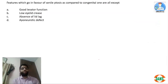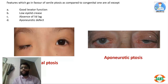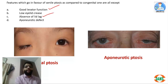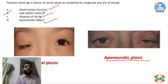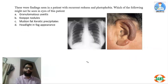Regarding features that favor senile ptosis over congenital ptosis: in congenital ptosis, the levator palpebrae superioris muscle is dystrophic, causing absence of the lid crease, whereas in acquired senile ptosis the lid crease is high. Levator function is good in senile ptosis. Absence of lid lag is present in congenital ptosis. The condition is called aponeurotic ptosis because of a problem in the aponeurosis of the LPS, with a characteristically high lid crease.